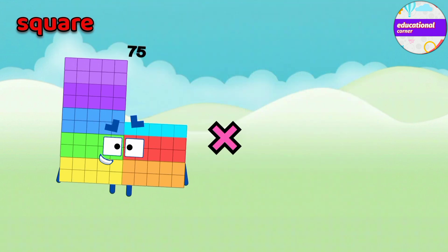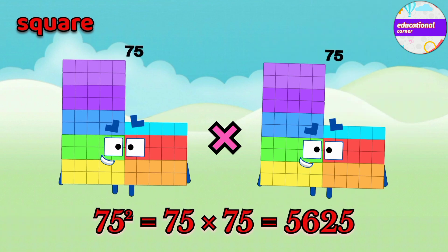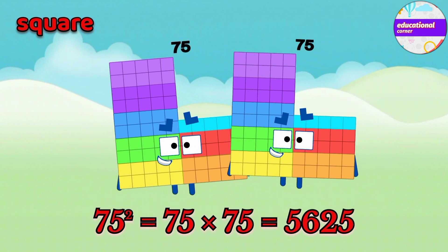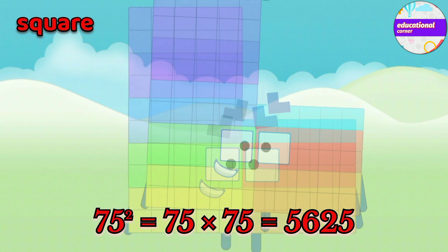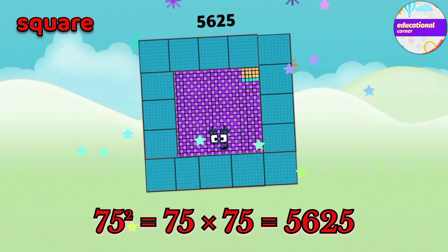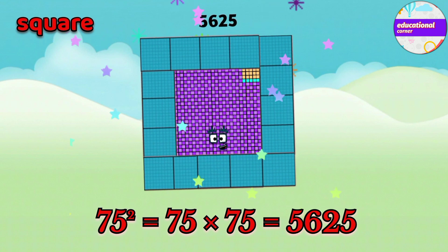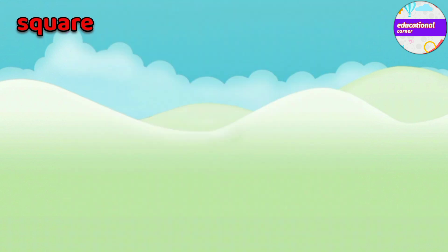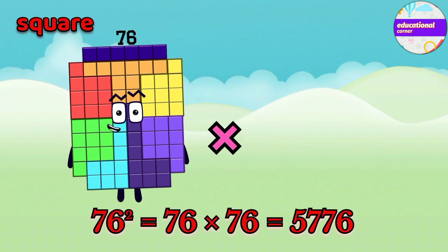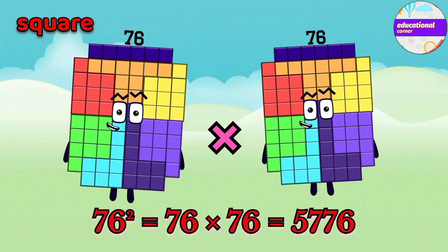75 multiply by 75. The square of 75 is 5625. 76 multiply by 76.